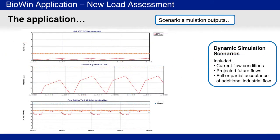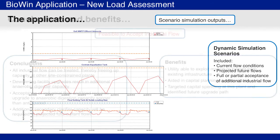In conducting these analyses, several operational constraints, such as the centrate equalization tank volume, were monitored in Biowind. Also, key performance indicators were noted, including effluent ammonia levels and secondary clarifier solids loading rates.